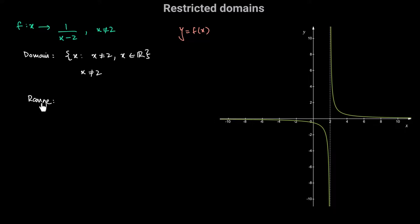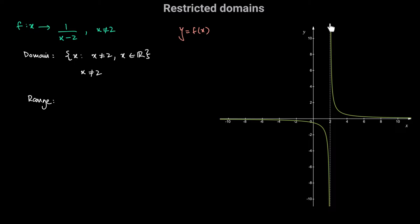When we talk about the range of this function — the set of outputs — as we move from left to right, y is never going to be equal to 0. As x approaches 2 from the left, y is infinitely negative; it doesn't have a value at x equals 2. Just past x equals 2, y is infinitely large positive, then gets closer and closer to 0 but never equals 0. So y can be any negative real number or any positive real number, but never 0.